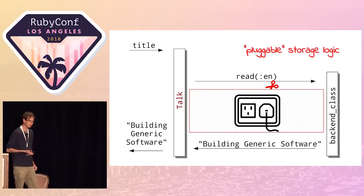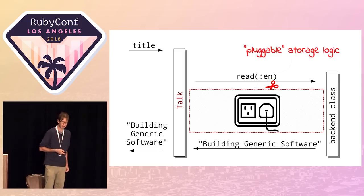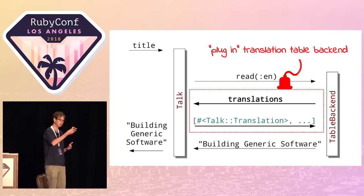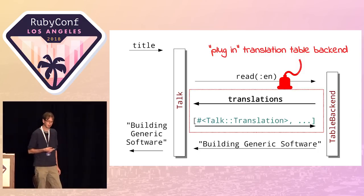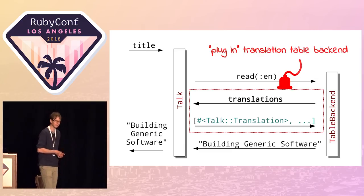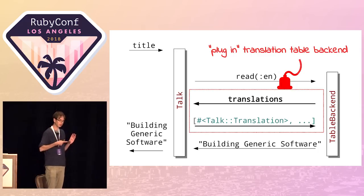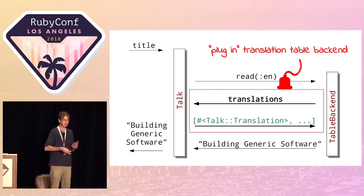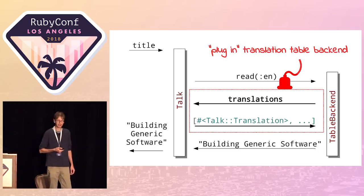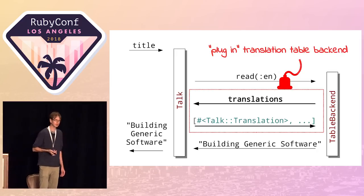But there's something missing. If we plug in the translation table backend instead, the top part doesn't change — the talk still says 'hey backend, give me the value for English.' The table backend would need to join the translations table onto the model. It would probably use an association, saying 'give me your translations,' iterate over them, find the one in English, and grab the title. But that won't actually work because the talk doesn't have an association called `translations` — all we did was call `translates`. We never added anything else. We need a hook for the backend to define something on the model.